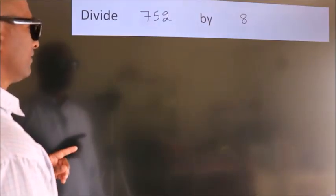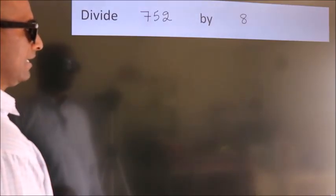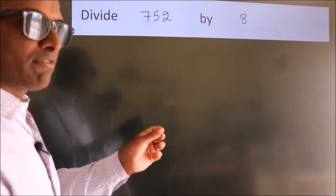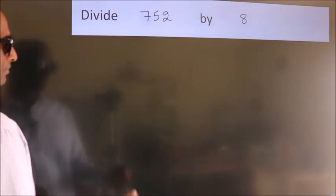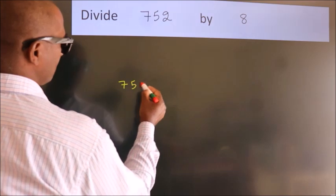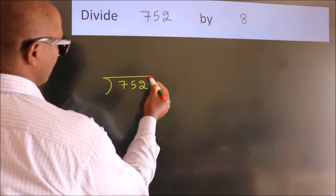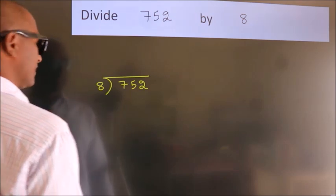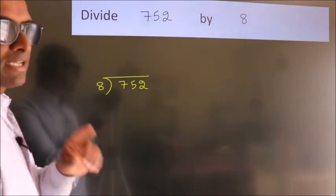Divide 752 by 8. To do this division, we should frame it in this way: 752 here, 8 here. This is your step 1.